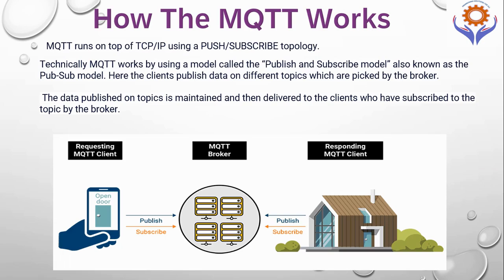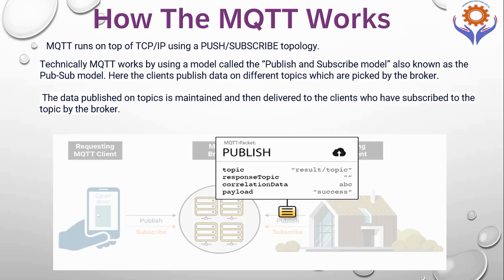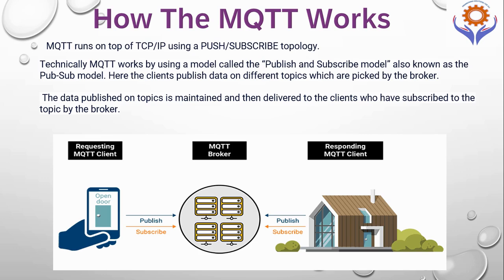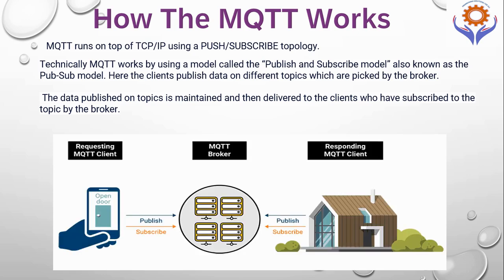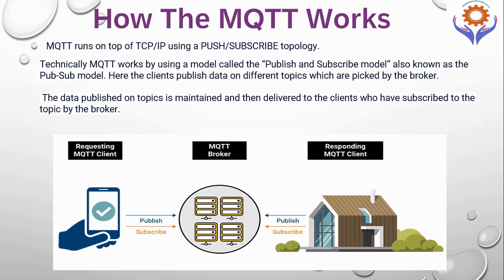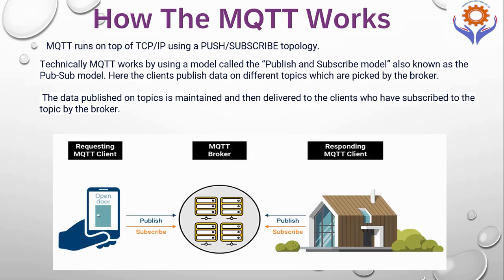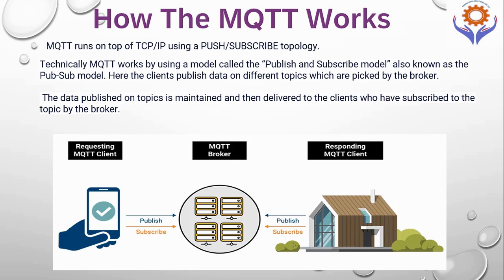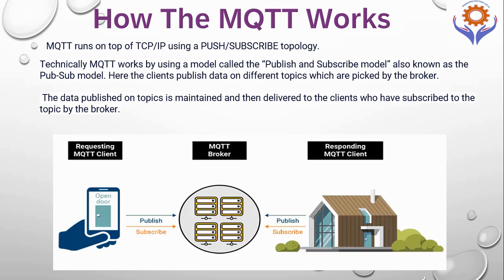How does MQTT work? MQTT runs on top of TCP/IP using a publish-subscribe topology. MQTT is an event-driven protocol — there is no periodic or ongoing data transmission. The data published on topics is maintained and delivered to the clients subscribed to those topics by the broker. For example, the MQTT client publishes topics, response topics, correlation data, and payload to the MQTT broker. The MQTT broker receives the data from the responding MQTT clients and publishes it to the requesting MQTT clients.